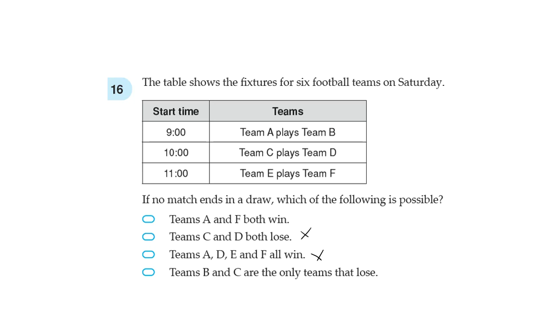B and C are the only teams that lose. That could be possible, but for that to be possible, E and F would have to draw. And we're told that there is no draw. So that's wrong as well. So the first one is your answer.